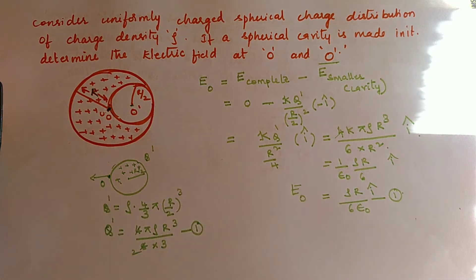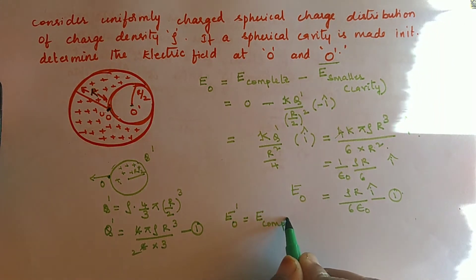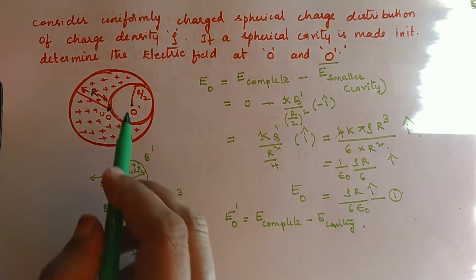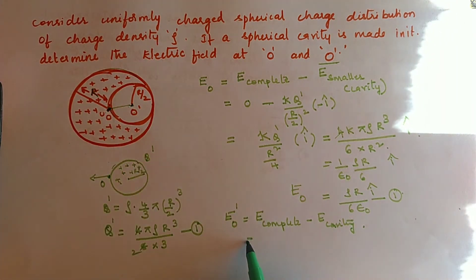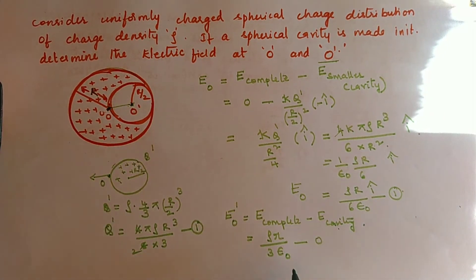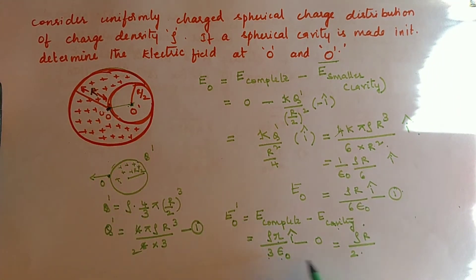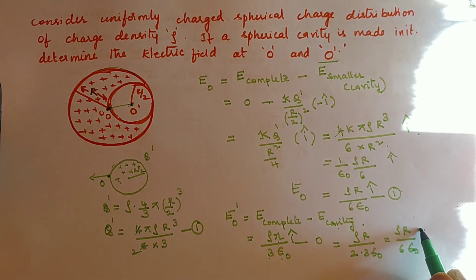For point O', the electric field equals E from the complete sphere at O' minus E at the center of the cavity. For the complete sphere, O' is inside at distance r/2 from center. The field there is rho × (r/2) / (3ε₀), while the field at the center of the cavity is zero. Simplifying gives rho r / 6ε₀ in the i-cap direction — the same result as at O.